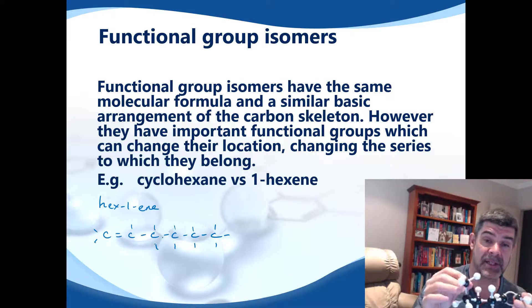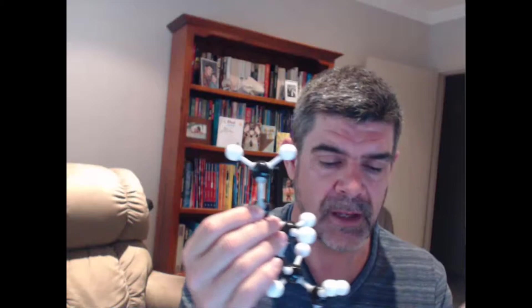Now I want to create an isomer. To create an isomer, I can't add or subtract any atoms, but I want to change the functional group. The functional group here is the double bond. One of the simplest ways to do this is to break that bond and create a cyclic structure. In breaking that bond, I need another hydrogen in one place and I just connect the ends.